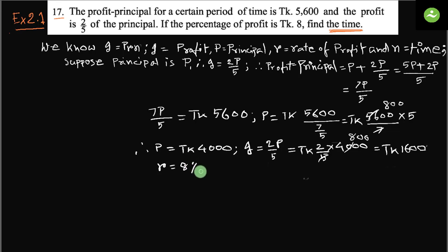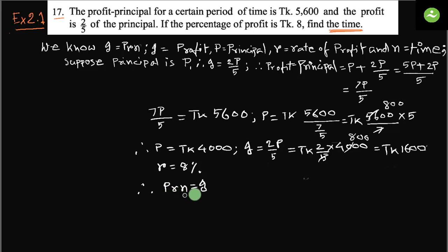Therefore, from the formula we write P times R times N equals I — we write it this way because we have to find N. So rearranging: N equals I divided by P times R.